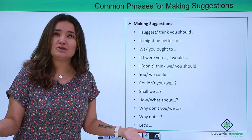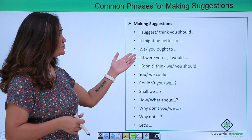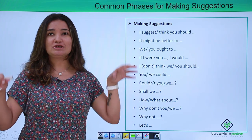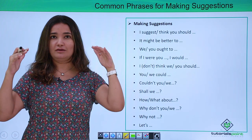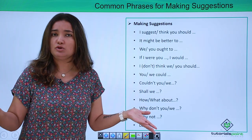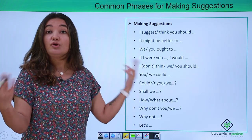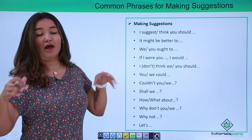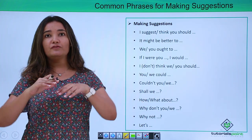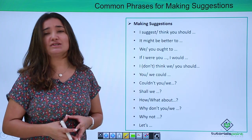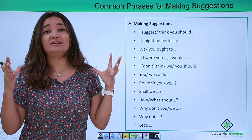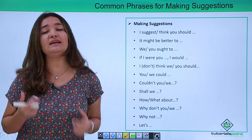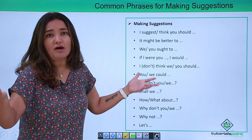'It might be better to look into the records before going to the heads.' Or: 'We/you ought to.' Here you are making a much more direct suggestion — not diplomatically or politely, but assertively. For example: 'We ought to go through the data before putting forward the project.' Then there is 'If I were you, I would have...' This is a more friendly and concerned way of presenting a suggestion, as if you were in that particular situation yourself. For example: 'If I were you, I would have done so and so.'